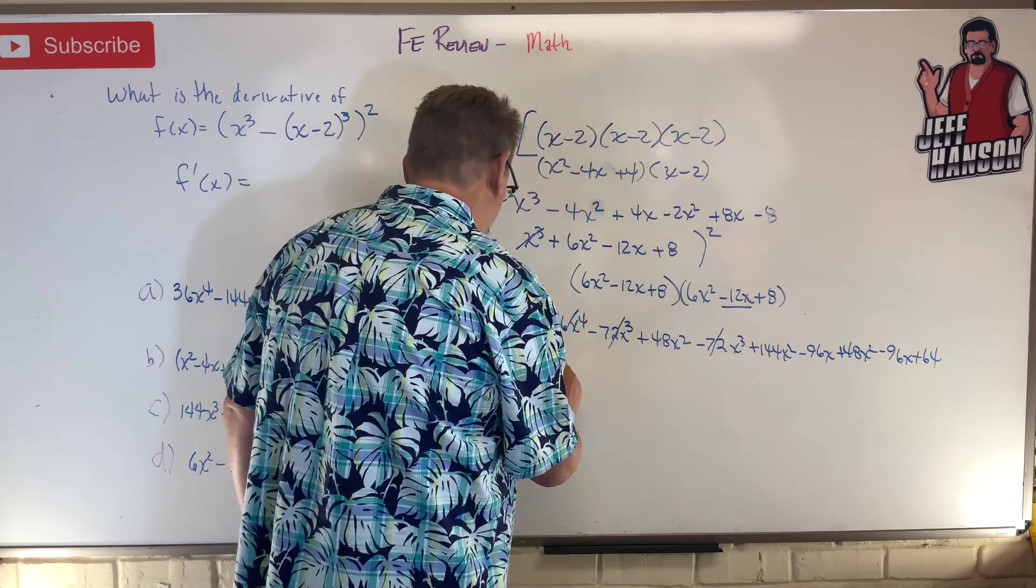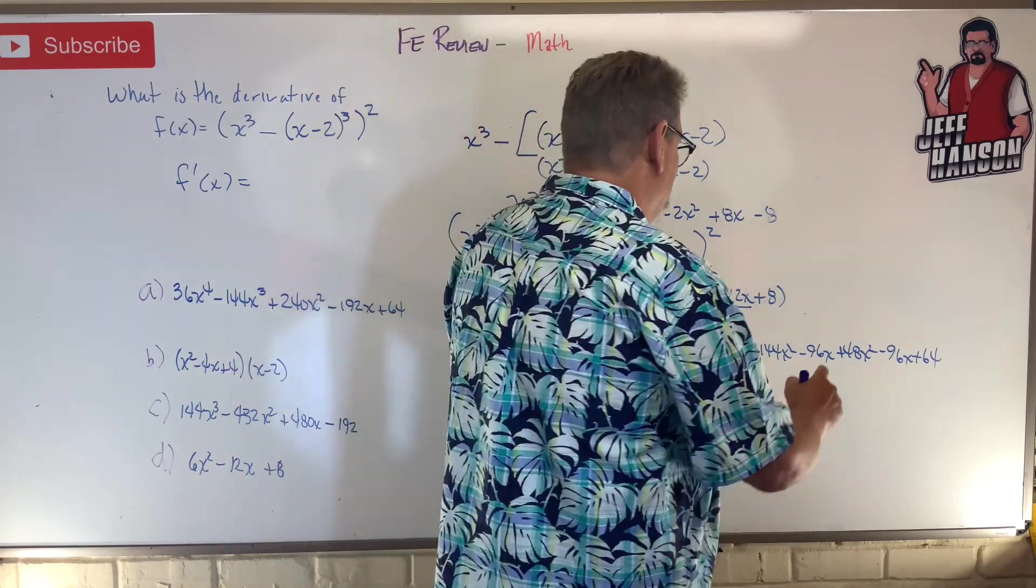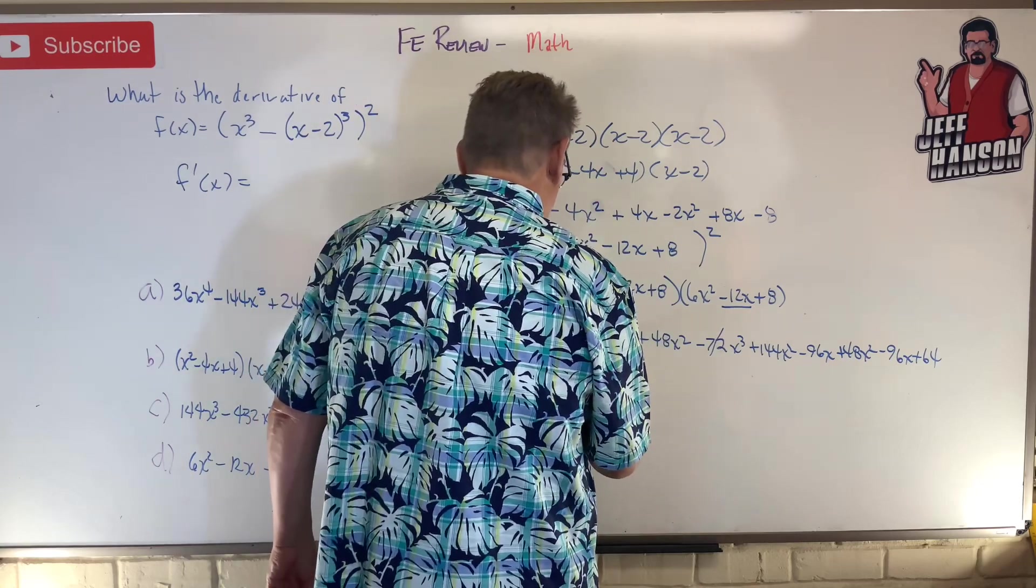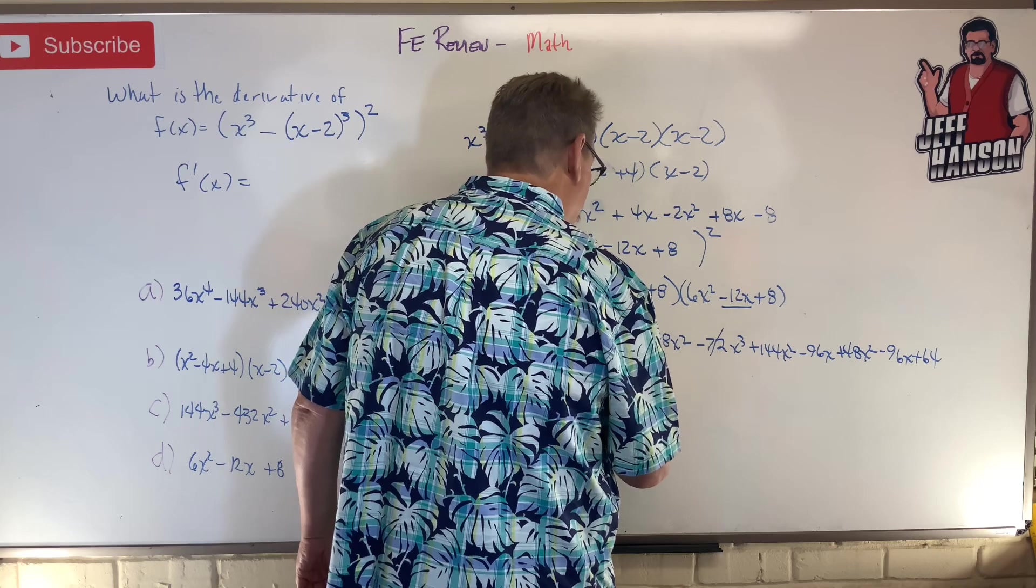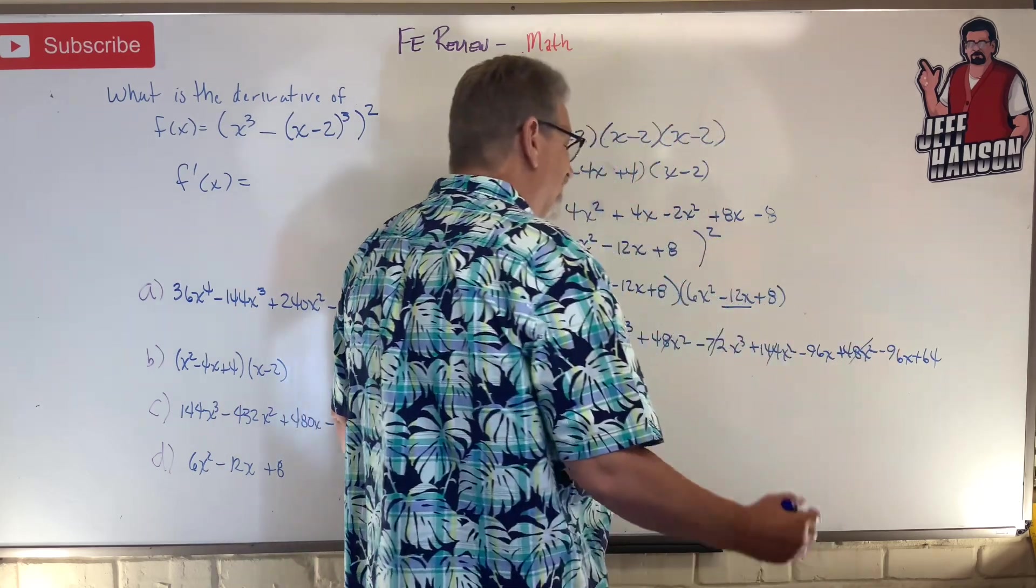How many x² do I have? I got 48 and 48 is 96 and 144 more is 240x². I got you and I got you and I got you.